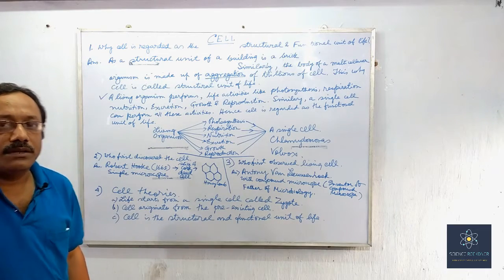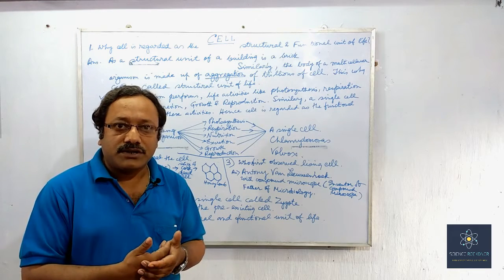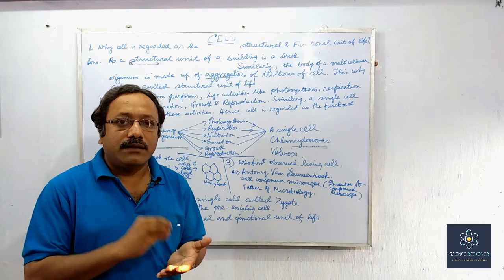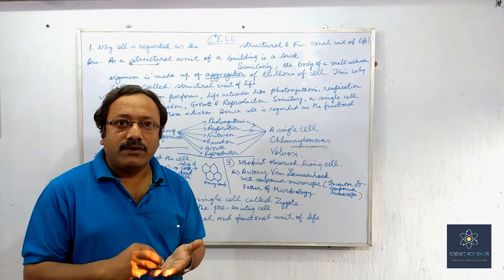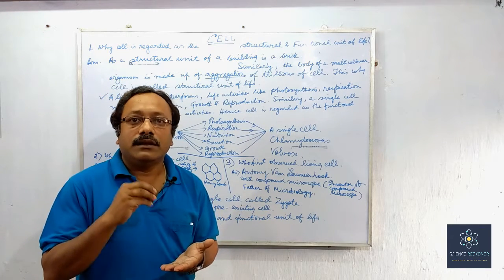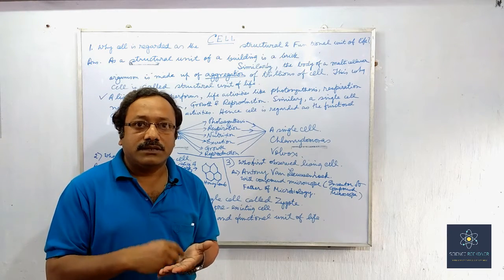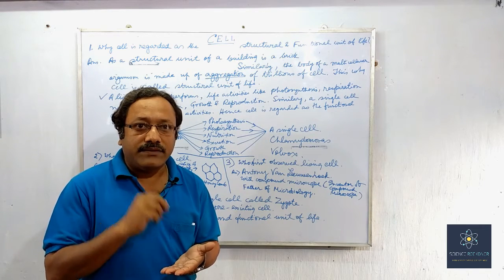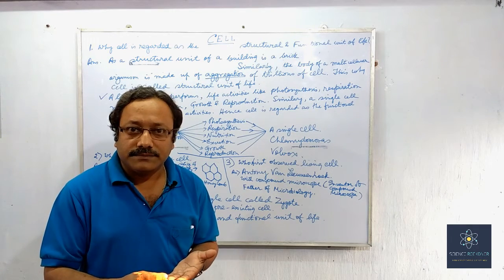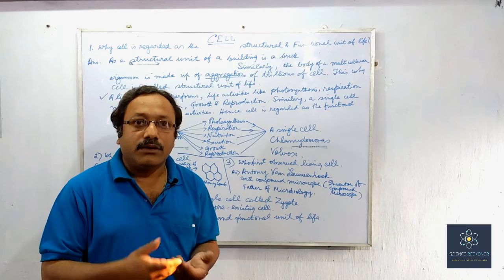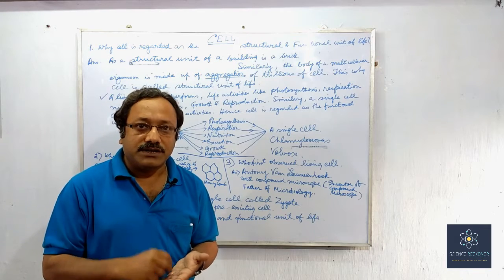Let us do a recapitulation. Number one: the cell is the structural and functional unit of life. Number two: Robert Hooke first observed the dead cell under the microscope. Number three: Antony van Leeuwenhoek first observed living cells under the compound microscope. Number four — the three cell theories: life starts from the single cell called the zygote; the cell originates from a pre-existing cell, you cannot prepare a cell in the laboratory; and the cell is the structural and functional unit of life.